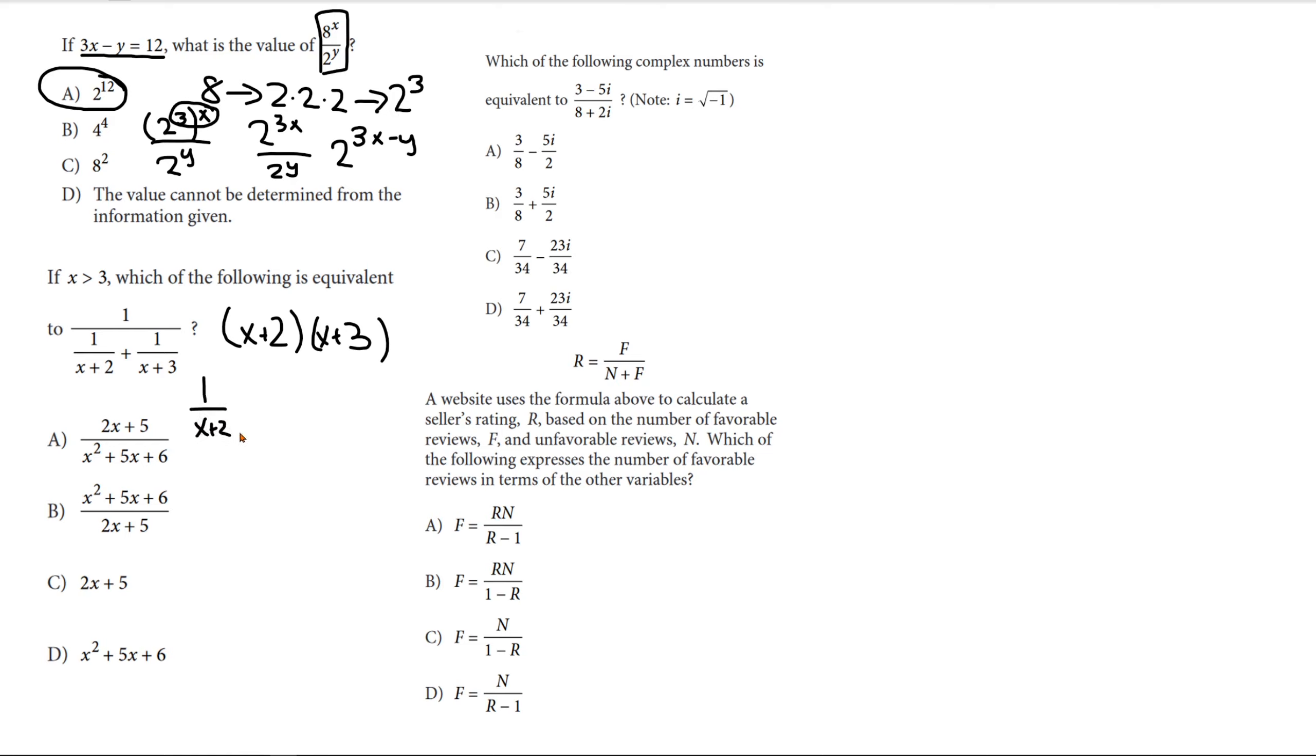So, if we have 1 over x plus 2, all we need is that x plus 3. So, we need to multiply by x plus 3 on the top and bottom so that we get the common denominator. And there is our common denominator right there. And, let's do this for the other fraction.